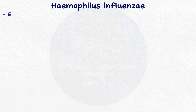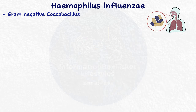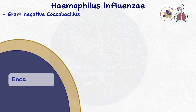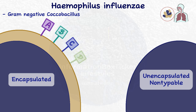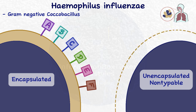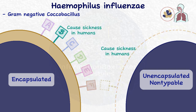Haemophilus influenzae is a tiny gram-negative coccobacillus that often colonizes the human respiratory system. There are two types of H. influenzae: encapsulated strains and unencapsulated strains. Encapsulated strains are categorized into six serotypes based on their capsular antigens — A, B, C, D, E, and F — but unencapsulated strains are non-typable since they lack the polysaccharide capsule and hence capsular antigens. The strains that cause sickness in humans are often Haemophilus influenzae type B, sometimes known as HIB, and Haemophilus influenzae non-typable.